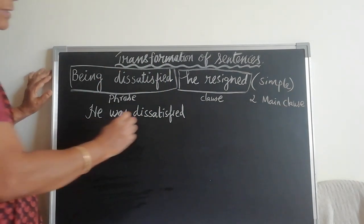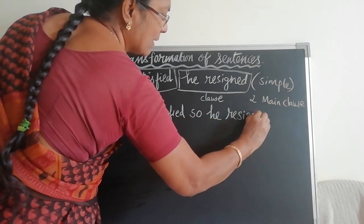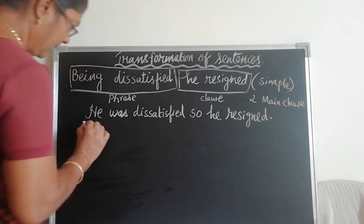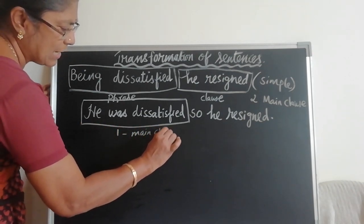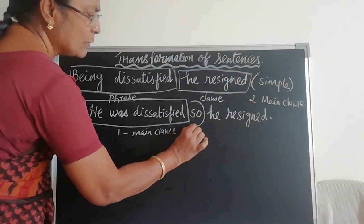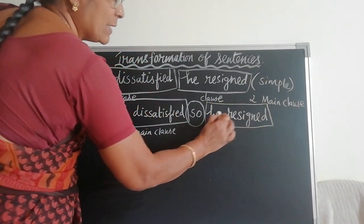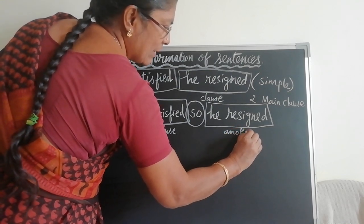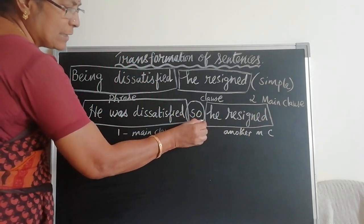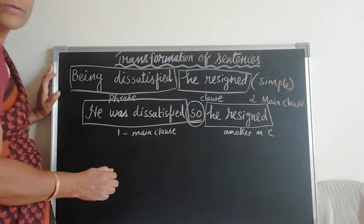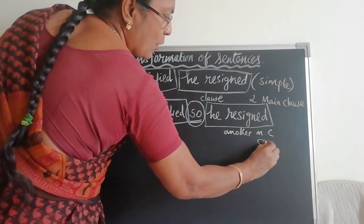'He was dissatisfied' is one main clause, and 'he resigned' is another main clause. So 'he was dissatisfied' is the first main clause, and 'so' is a coordinate conjunction connecting it to the second main clause, 'he resigned.' So it is a compound sentence.